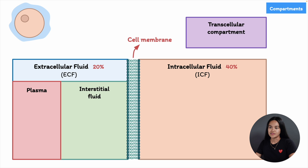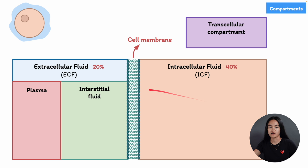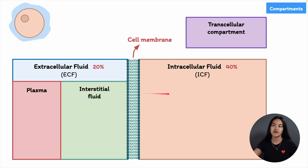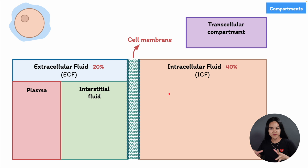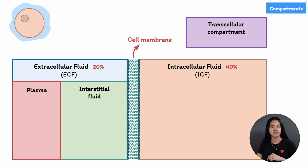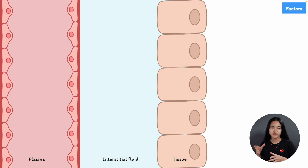Once the drug enters the body, it has the potential to be distributed into any of these three main compartments: plasma, interstitial fluid, and the volume inside our entire body cells. Now that we've discussed body fluid compartments, let's reduce complexity and walk through the distribution process and the factors that influence it.